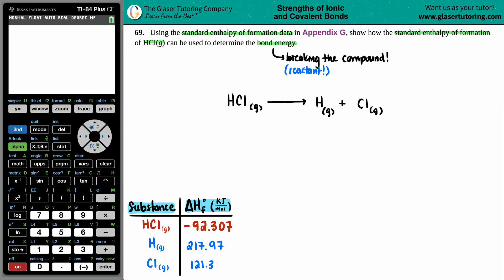So we have a negative 92.307 kilojoules per mole for HCl, and then we got 217.97 and 121.3. Now what are we going to do with these numbers? Well that's a good question, but you know that there's a formula. And maybe if you did your enthalpy unit, it might come to you, right? It's this formula right here.